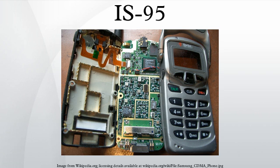Regarding the physical layer, IS-95 defines the transmission of signals in both the forward and reverse directions. In the forward direction, radio signals are transmitted by base stations. Every BTS is synchronized with a GPS receiver so transmissions are tightly controlled in time.